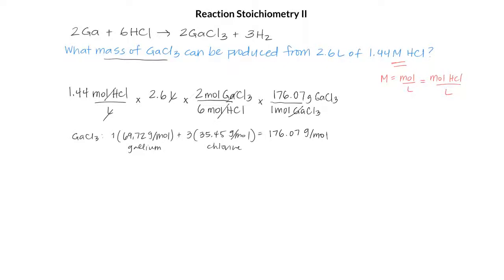And our moles cancel, and we're left with grams, which is what we want. And our answer is 220 grams of gallium chloride that can be produced from 2.6 liters of 1.44 molar HCl.